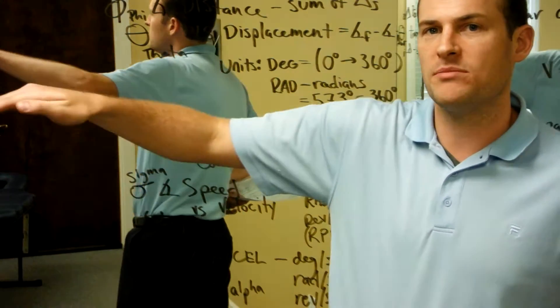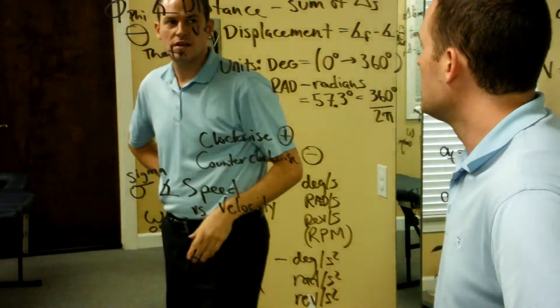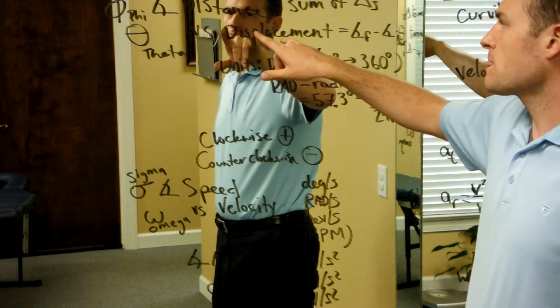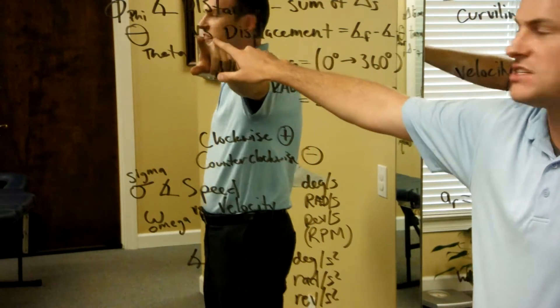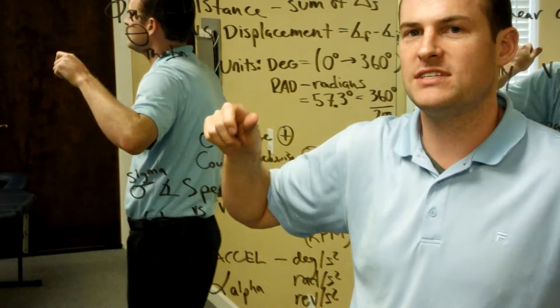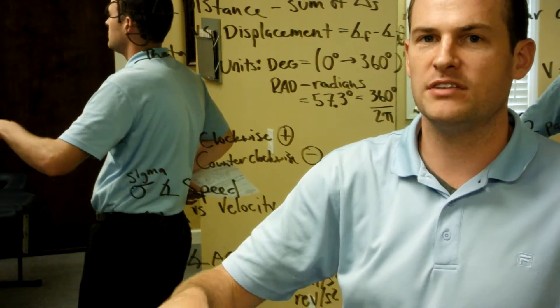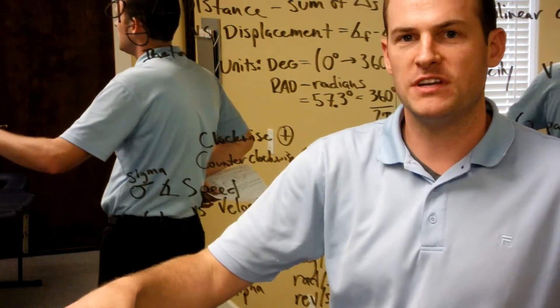Instead of moving from point A to point B, it's from angle A to angle B. Let's talk about the first level. We're talking about the angular distance versus the angular displacement. Again, in linear we talked about how distance is the total distance traveled and displacement is the distance from start to finish.